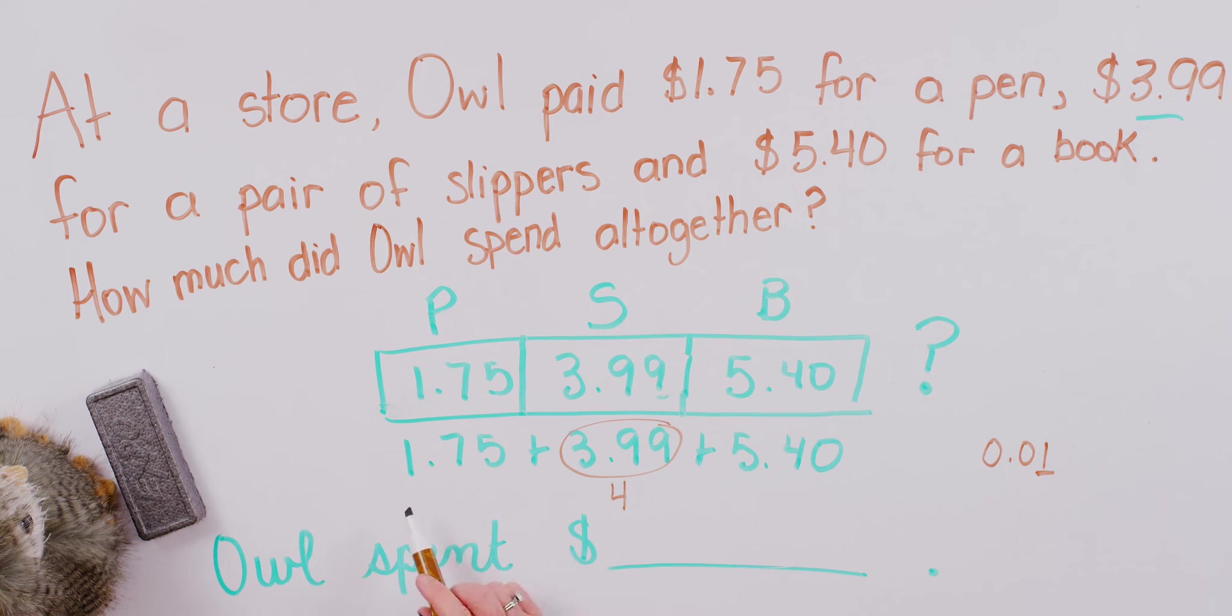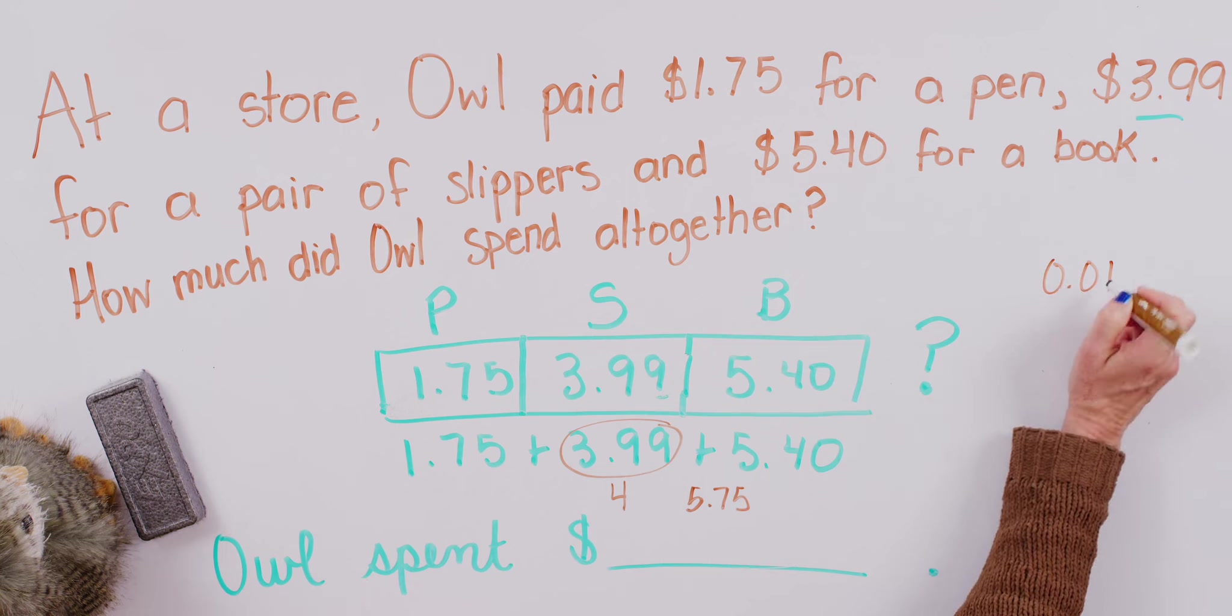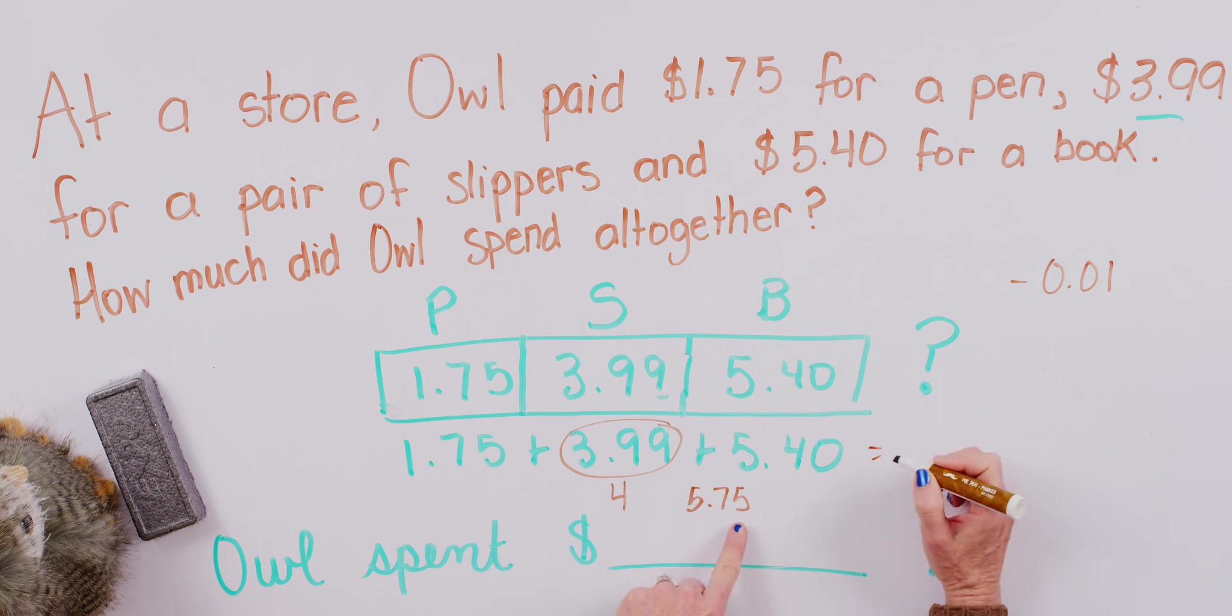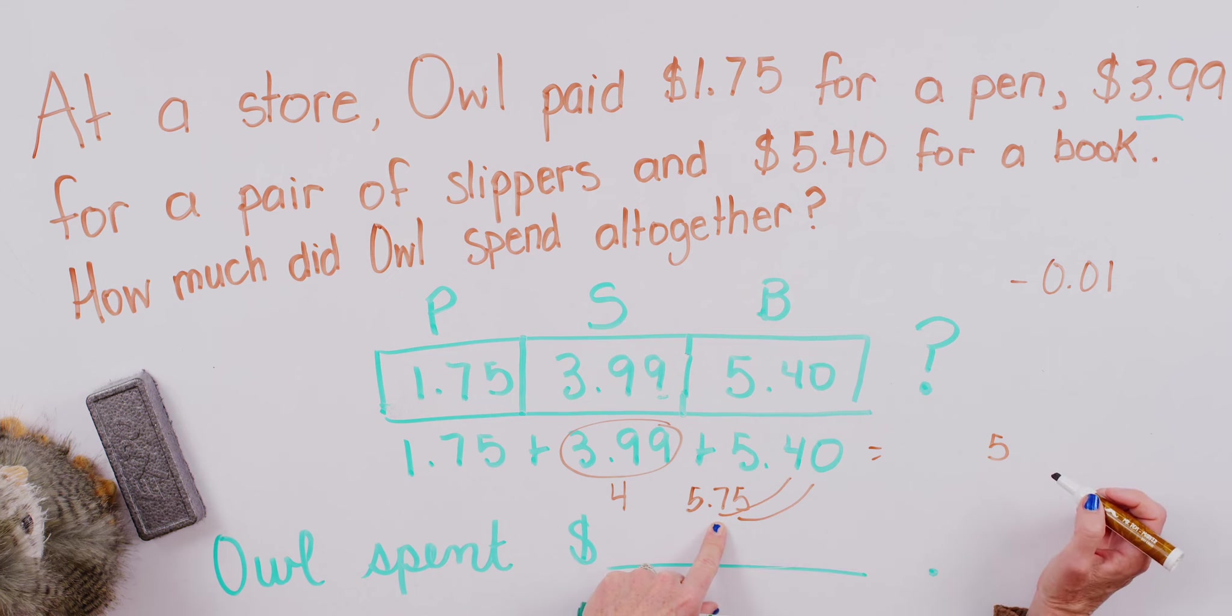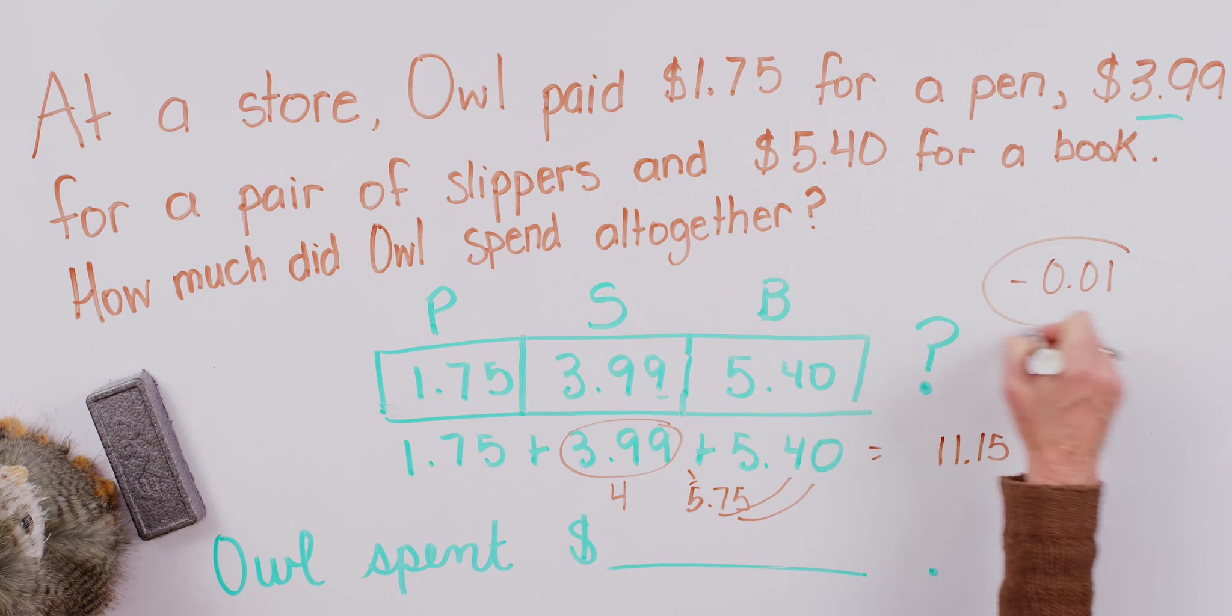Now, what do we say for 4 plus 1.75? That gives us 5.75. And then we have to add 5.75 to 5.40. What does that give us? We're going to remember this. We're going to have to take that one away. But I think we can do this right here. 5 plus 0 gives us 5 hundredths. 7 plus 4 gives us what? Yeah, 11 tenths. So you have to be thinking about moving that 1 into our whole number there. And then we've got 5 plus 5 is 10, and one more gives us 11. But now remember this. We just need to subtract one-hundredth from 11.15, and that gives us 11.14 hundredths there. And that gives us our total.